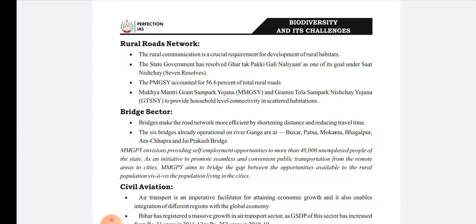Pradhan Mantri Gram Sadak Yojana accounts for 56.6 percent of total rural roads. We also have different programs: Mukhyamantri Gram Samparki Yojana and Grameen Tola Samparki Nishchay Yojana. PMGSY is controlled by the central government, while Mukhyamantri Gram Samparki Yojana operates at the state level, and Gram Tola Samparki Yojana functions at a separate sub-level.